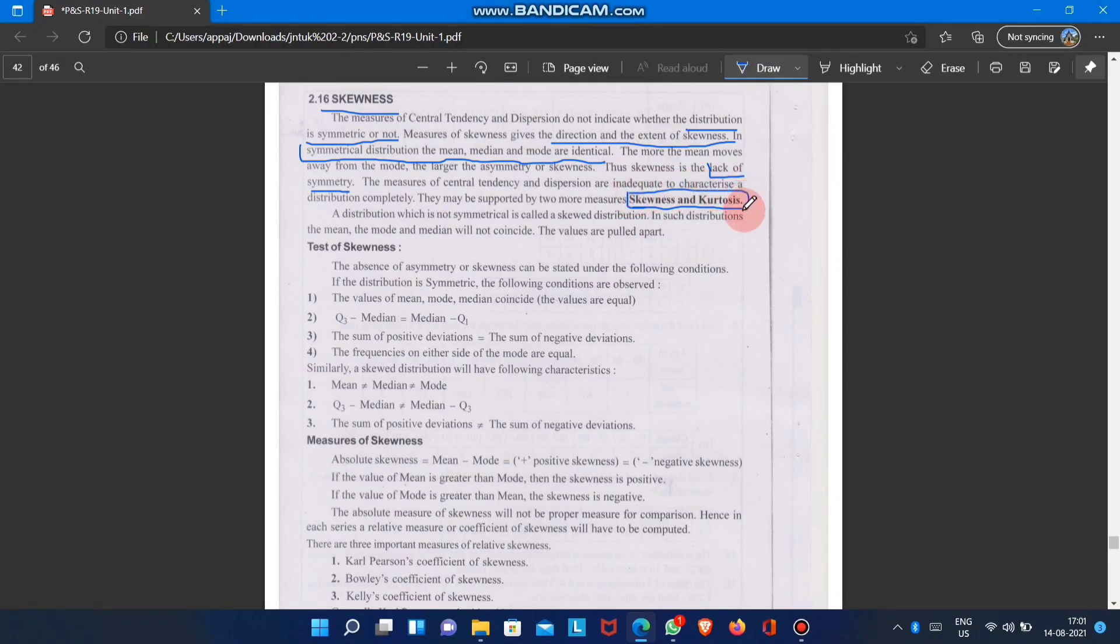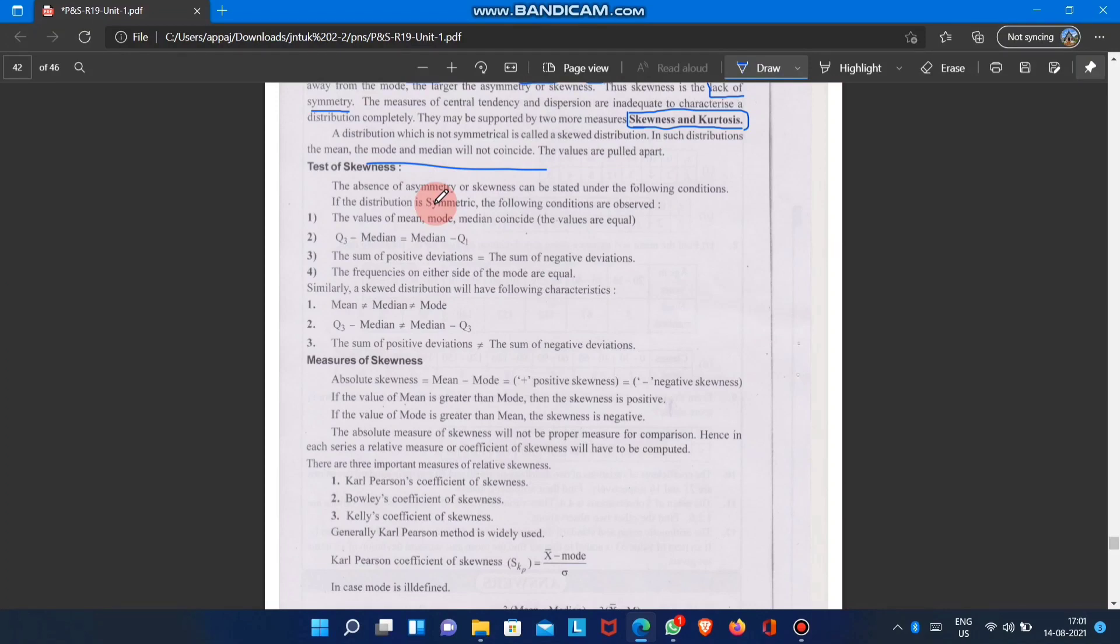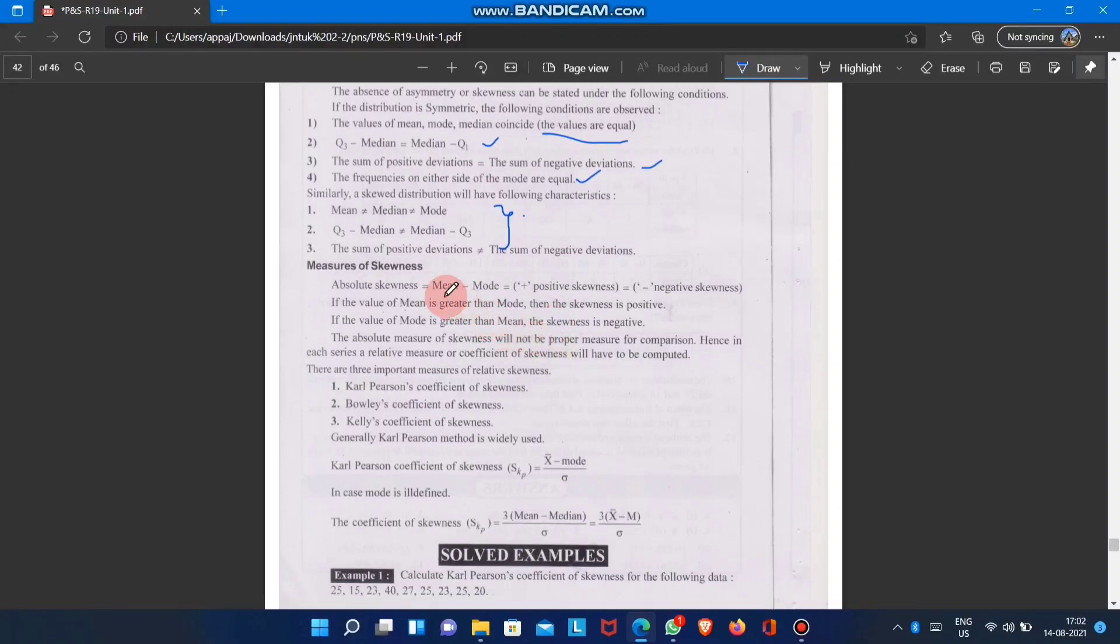Skewness is defined as when the mode and median will not coincide. Mean, mode, and median may not be identical. If the values of mean, median, and mode coincide and are equal, there is no skewness. But median and mode may differ from mean in skewed distributions.